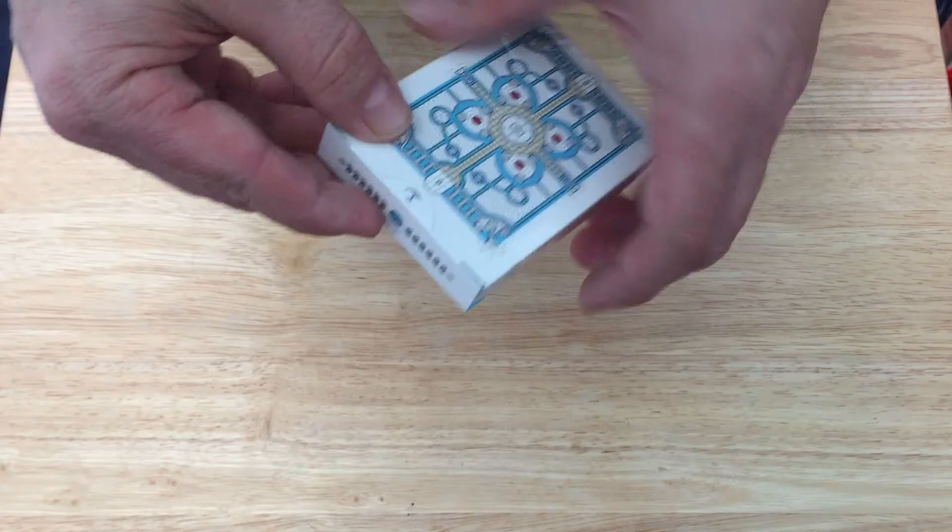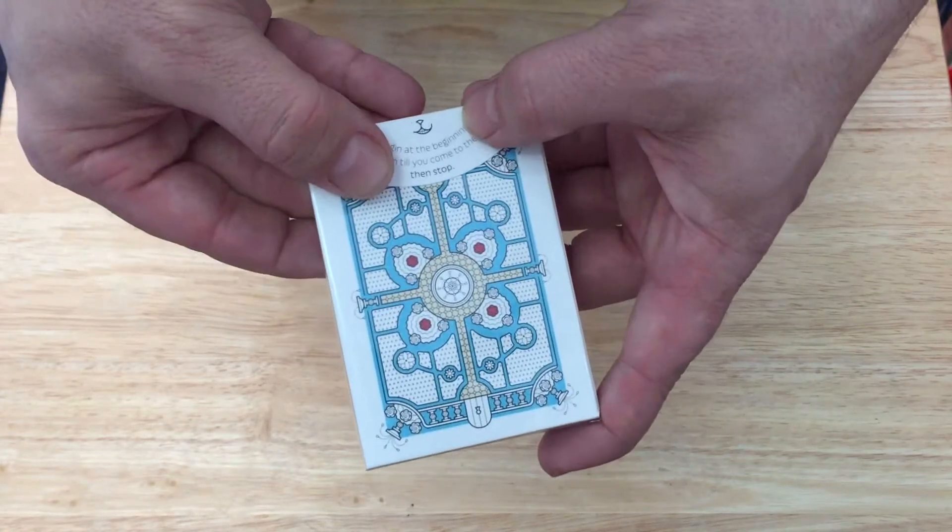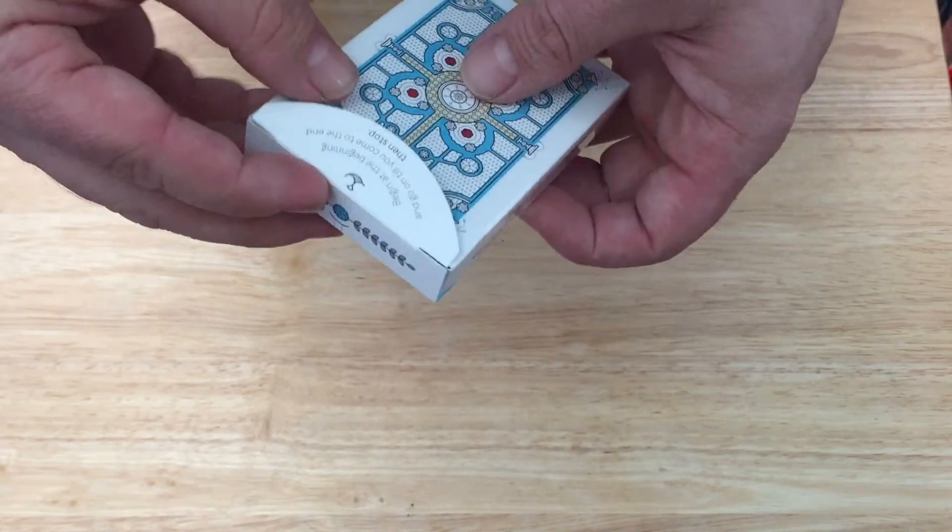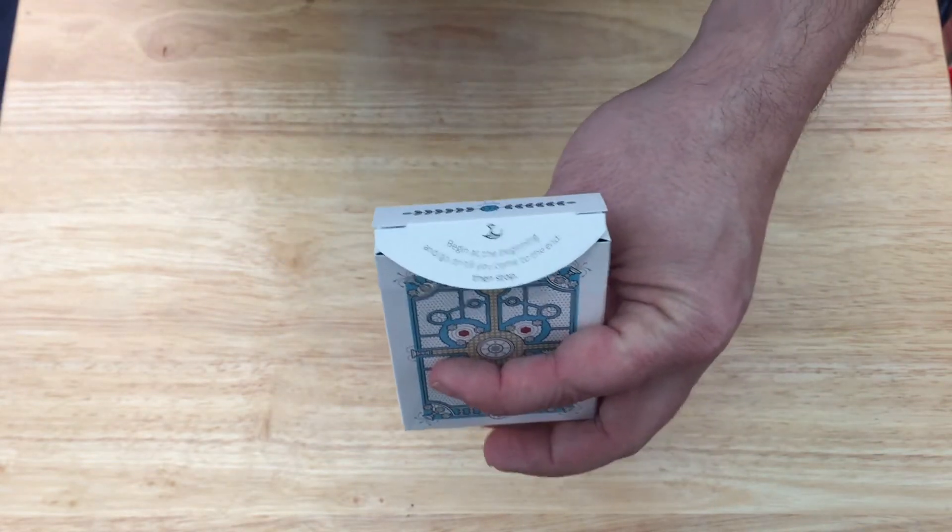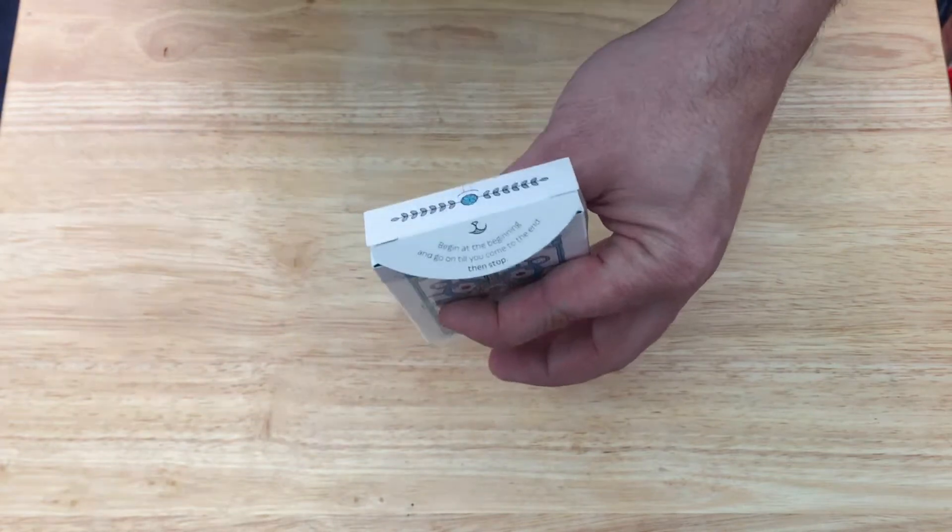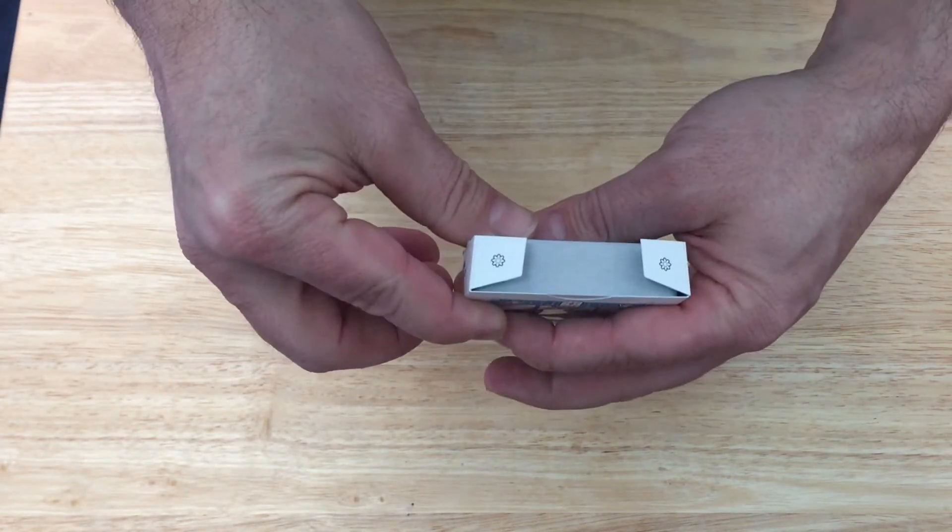On the flap it says begin at the beginning and go on until you come to the end then stop. We'll do that, we'll go through the deck and then we'll stop more or less. You get a couple of flowers on these flaps.